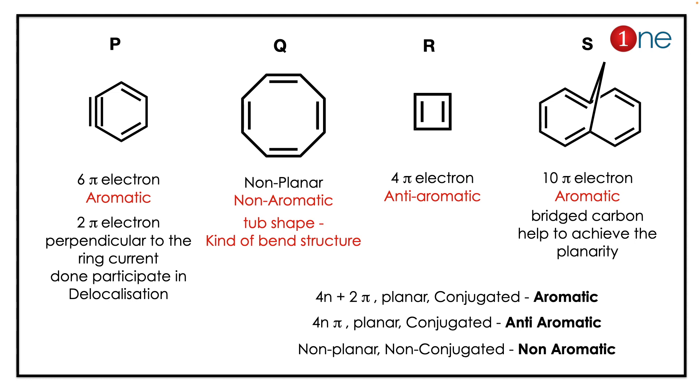To understand this, you should know Huckel's rule. Huckel's rule says 4n + 2 pi electrons, planar and conjugated means aromatic. 4n pi electrons in the same case is anti-aromatic. If the compound is non-planar or non-conjugated, it means you have a non-aromatic structure.